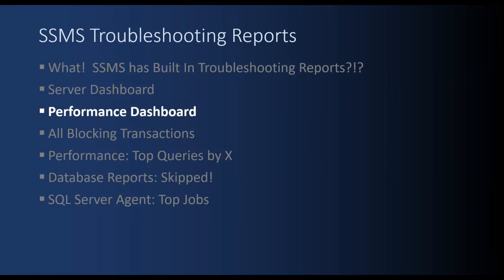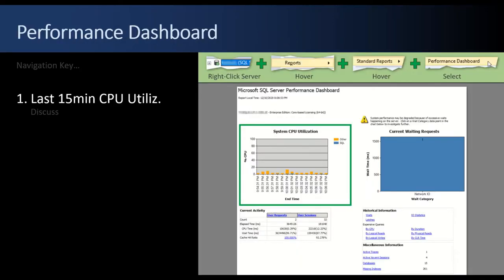Next up are the Performance Dashboard reports — there are many of them; the next 15 slides deal with them. These are the ones I use frequently. The Performance Dashboard is just one report but it's really a wrapper that sits on top of several other reports you can click down through. To get to it: right-click on the server, hover over Reports, hover over Standard Reports, and then click Performance Dashboard.